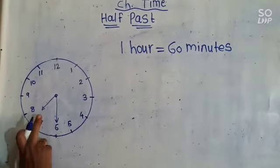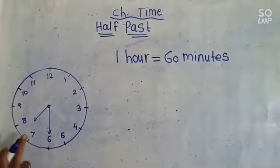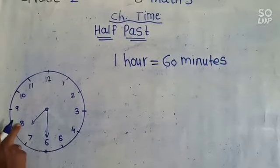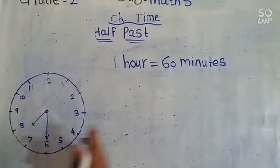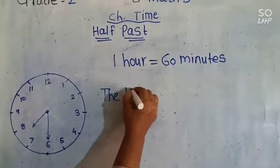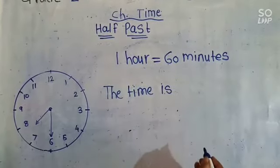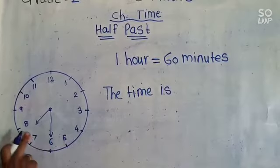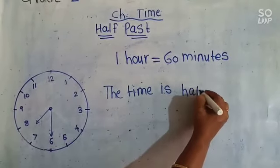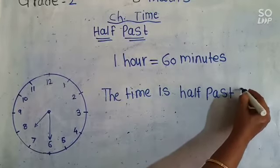Now in this clock, the minute hand is on 6. So the time is half past 7. Half past 7.